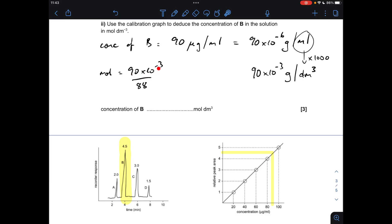Moles is mass over Mr. Mr of that ester is 88, so it's coming out as a concentration in moles per decimeter cubed at 1.02 times 10 to the minus 3. So it's quite tricky, that one, sort of playing around with the units, but hopefully my explanation made sense.